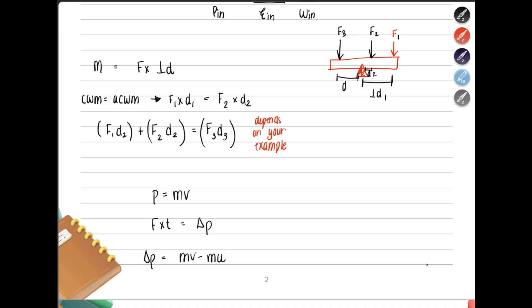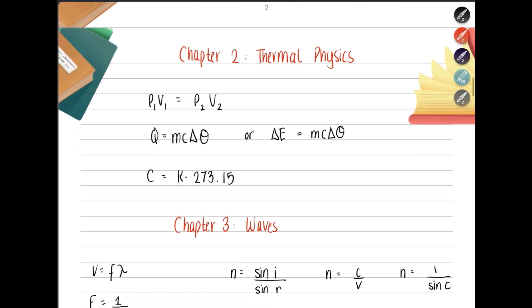Then you have momentum. Momentum is the quantity of motion. It's mass multiplied by velocity. And then a change in momentum, delta P, is the impulse. Force multiplied by time. This is the impulse. Force times time. Change in momentum is mv minus mu. Because momentum is mass times velocity. Mass multiplied by final velocity minus mass multiplied by initial velocity.